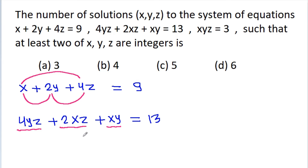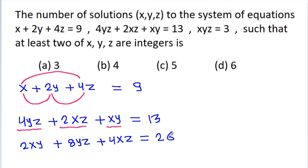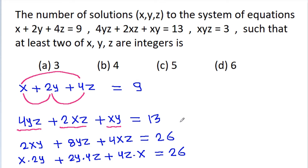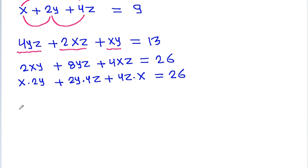If we multiply both sides by 2, then we will get 2xy plus 8yz plus 4xz is equal to 26, which is x times 2y plus 2y times 4z plus 4z times x is equal to 26. And the third equation is xyz is equal to 3.